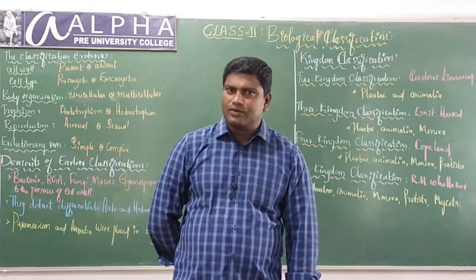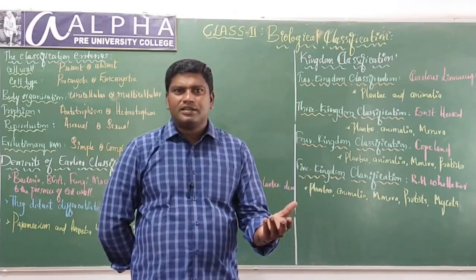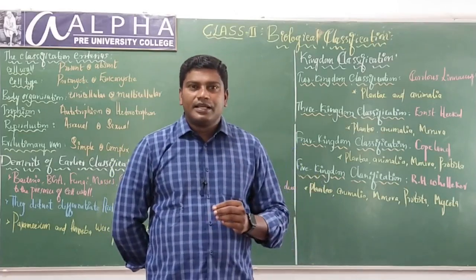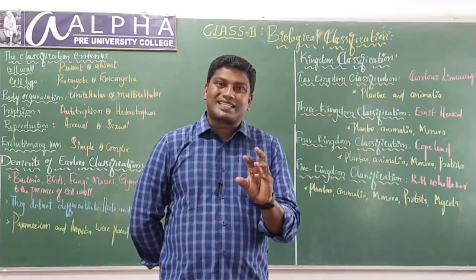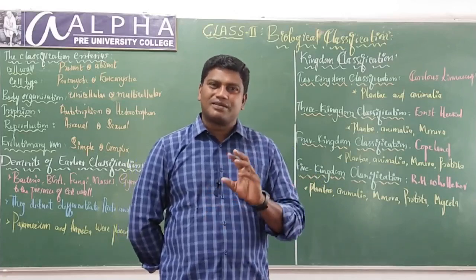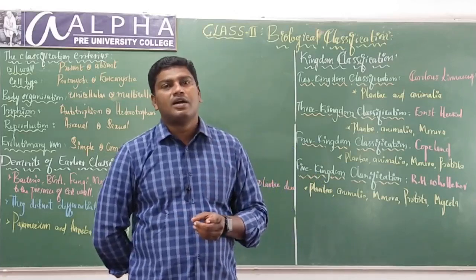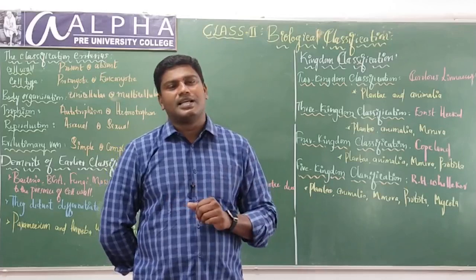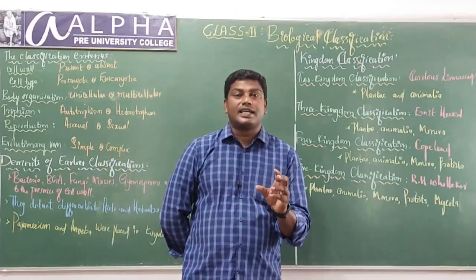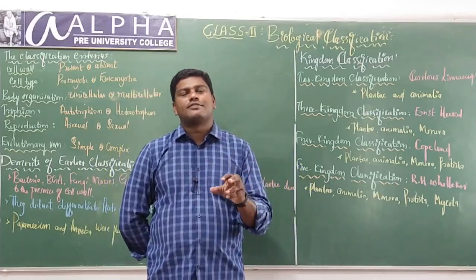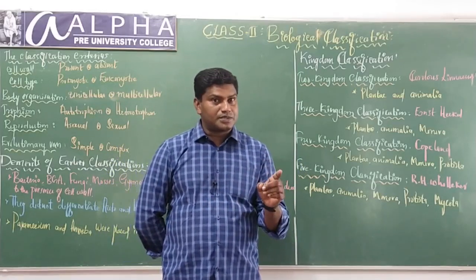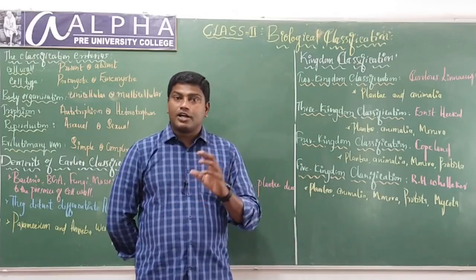Aristotle was the first person to start classification. His classification was completely unscientific — a completely artificial method. He classified the entire plants based on morphology as herbs, shrubs, and trees.